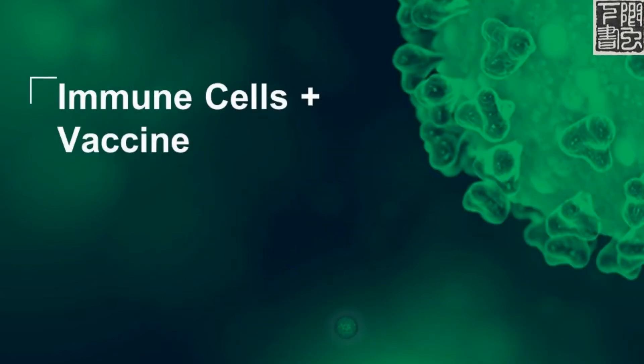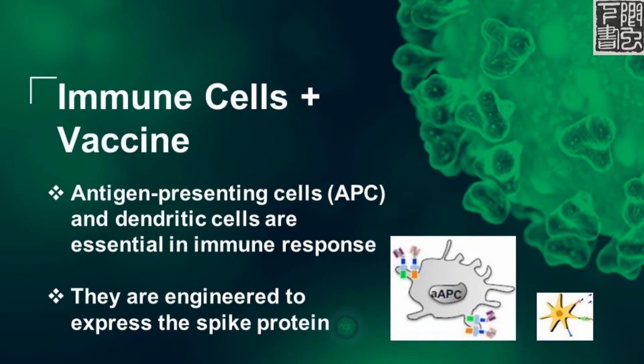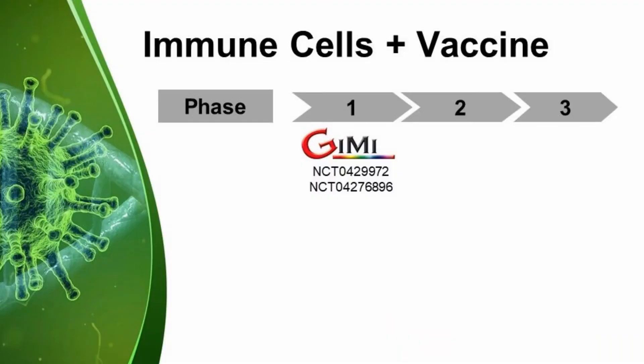There's also the strategy of loading the vaccine onto immune cells and then giving the loaded cells to the patient. Antigen-presenting cells and dendritic cells are immune cells that present viral antigens. They can be engineered with a vaccine to express viral antigens such as the COVID spike protein. The Shenzhen Geno Immune Medical Institute is working on both antigen-presenting cells plus vaccine and dendritic cell plus vaccine combinations. Ivita Biomedical, an American company, is testing dendritic cells loaded with COVID antigens in a combined Phase 1 and 2 trial.